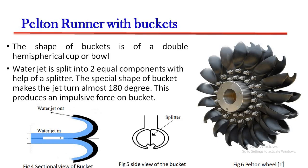Pelton runner with buckets: The shape of buckets is of a double hemispherical cup or bowl. The water jet is split into two equal components with the help of a splitter. The special shape of the bucket makes the jet turn almost 180 degrees, which produces an impulsive force on the bucket.